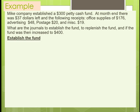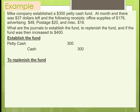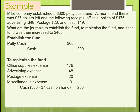Let's look at an example. My company establishes a $300 petty cash fund. At month end there was $37 left, with receipts for office supplies, advertising, postage, and miscellaneous expense. The journal entries cover: establishing the fund, replenishing the fund, and increasing the fund to $400. To establish the fund, we debit petty cash and take it out of the cash account. To replenish, take the total amount of $300 minus the cash on hand — that tells you how much to write a check for. Then journalize all expenses; hopefully they equal the $263, which in this case they do.